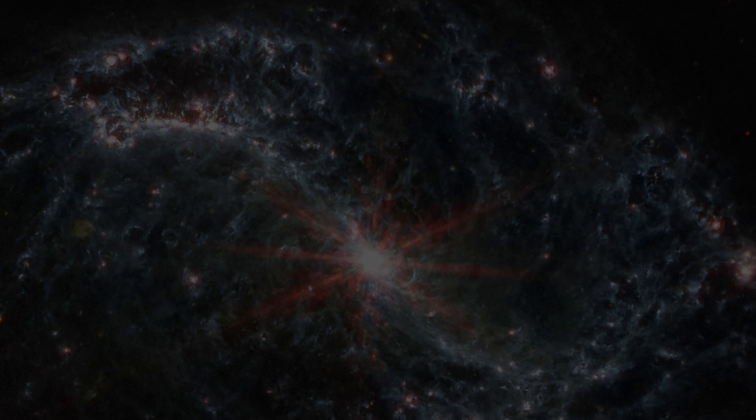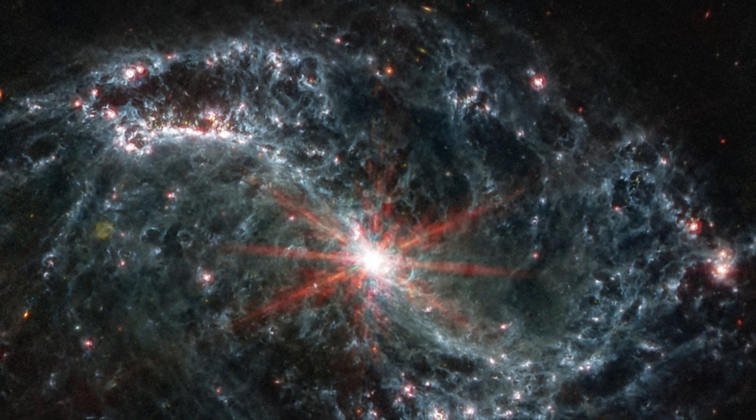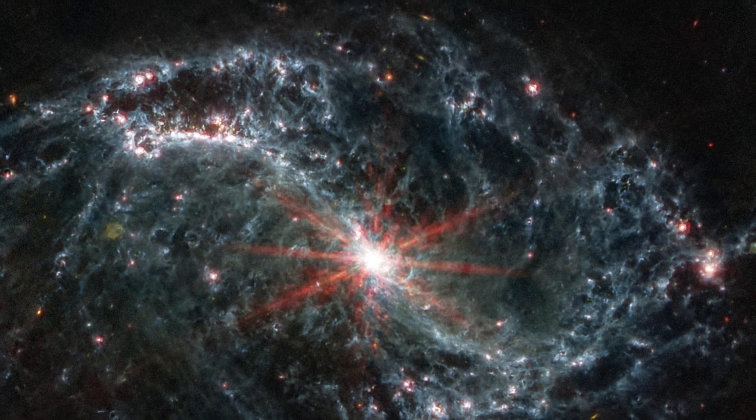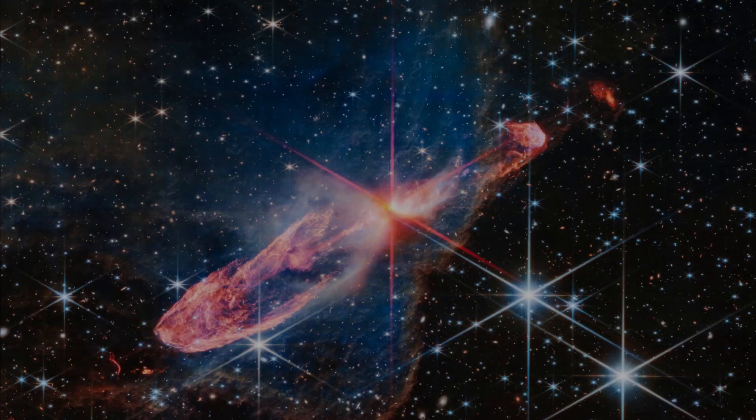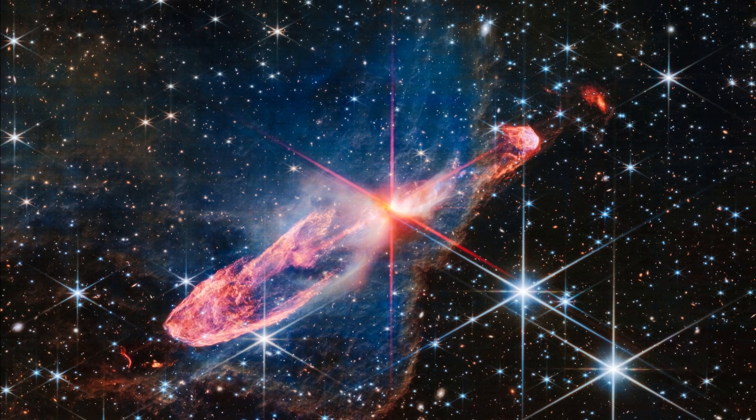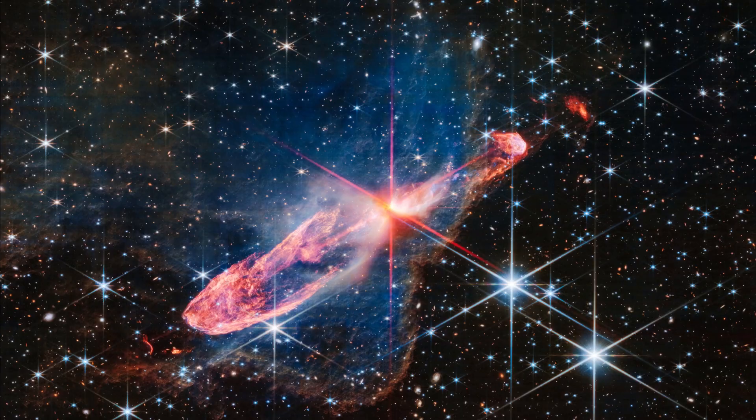the galaxies we're seeing far away don't look like young galaxies at all. They look old, similar to galaxies that are much closer to us. This is puzzling, because if the Big Bang really happened, these distant galaxies should be younger and less developed. Scientists can even estimate the age of a galaxy by looking at the light emitted from its stars, and what they're finding doesn't add up.